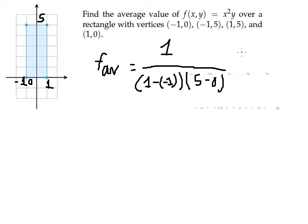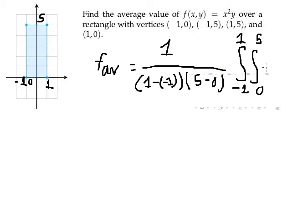Now we set up the double integral — from negative one to positive one, and from zero to five. The function inside is x squared times y. This is for dy, and the last part is for dx.